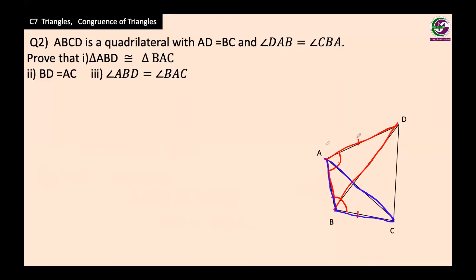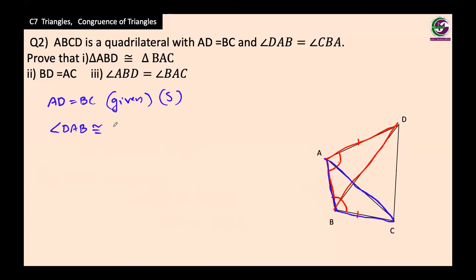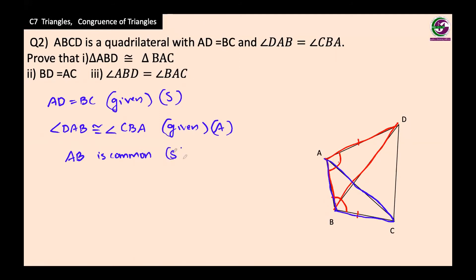Starting with the given conditions: side AD equals BC — so we have a side. Next, angle DAB equals angle CBA — that is also given, so we have an angle. Now, side AB is both red and blue at the same time, meaning AB is common to both triangles — so we have another side.